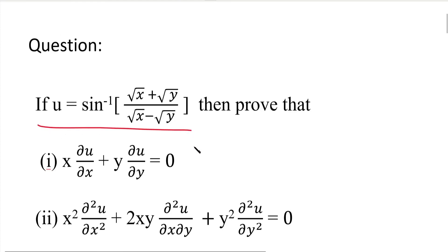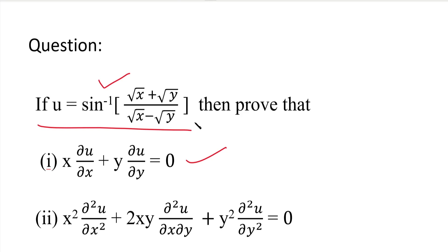Here u is the function we need to use for both parts. For the first part, we need first-order partial derivatives ∂u/∂x and ∂u/∂y, which we substitute into the equation. Instead of directly differentiating, we change the approach using Euler's theorem, which makes it much easier to work with the left-hand side.